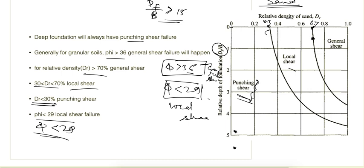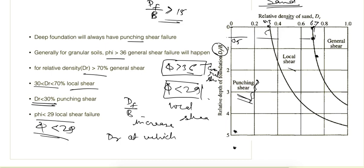When relative density is greater than 0.7, general shear failure occurs. As the Df/B ratio increases, the relative density at which general shear failure happens also increases, meaning a higher relative density is required for general shear failure to occur at greater depths.